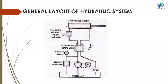First of all we will see the hydraulic layout of a hydraulic system. The schematic diagram of a hydraulic system is shown in the figure. The principal parts of the hydraulic system shown are: double acting cylinder, flow control valve, direction control valve, pressure gauge, pressure relief valve, pump, filter, and oil reservoir.